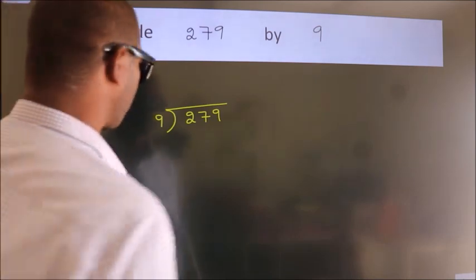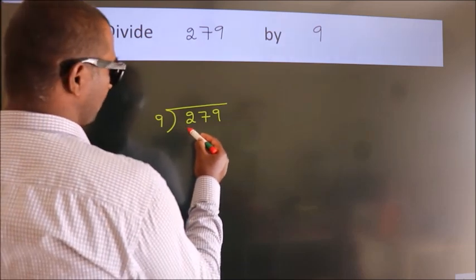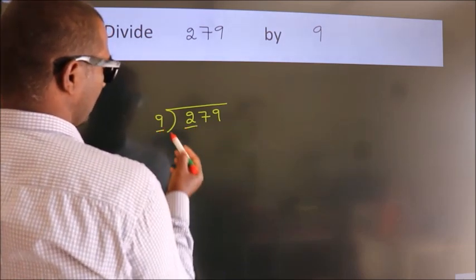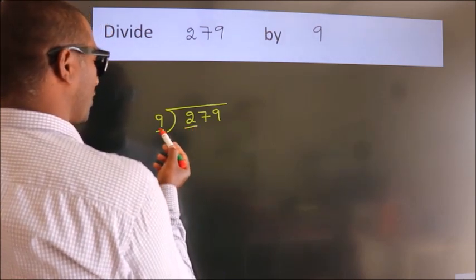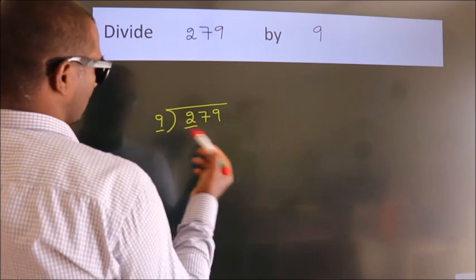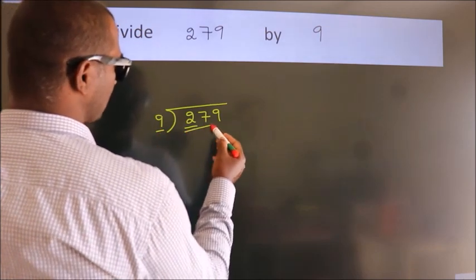Next, here we have 2. Here 9. 2 is smaller than 9, so we should take 2 numbers: 27.